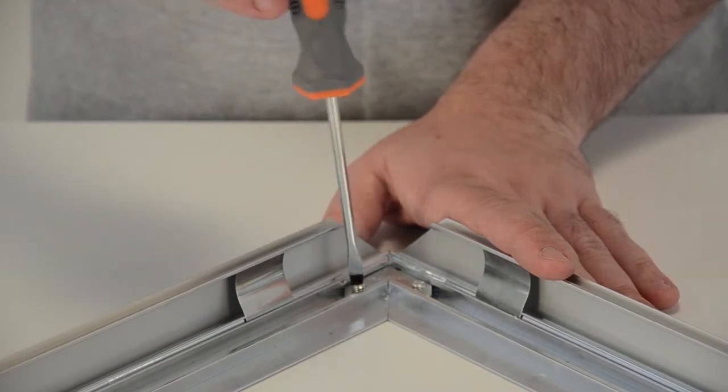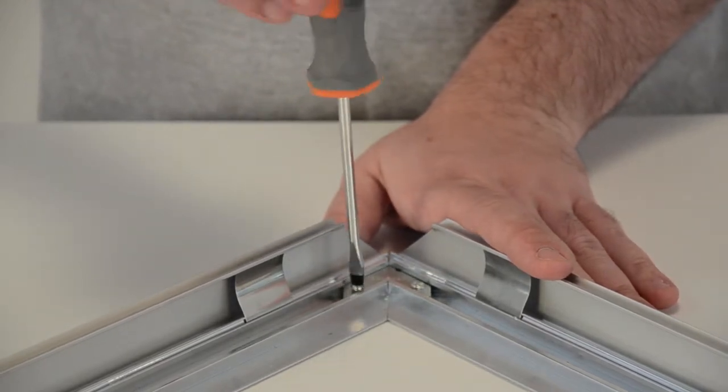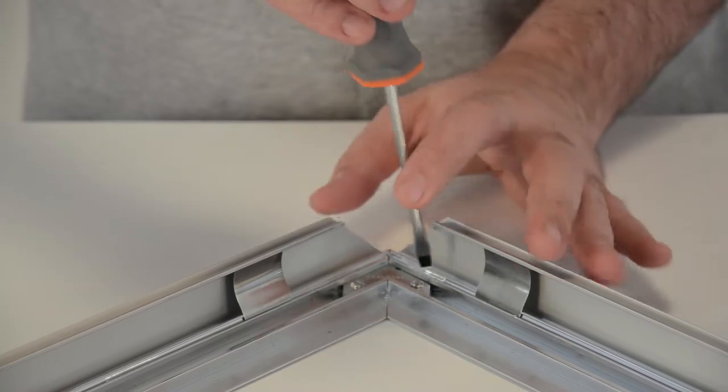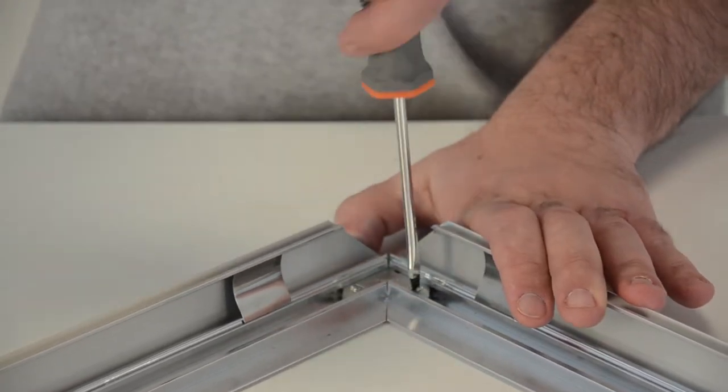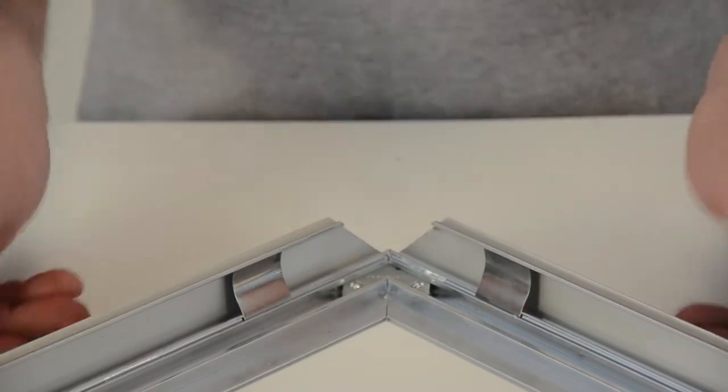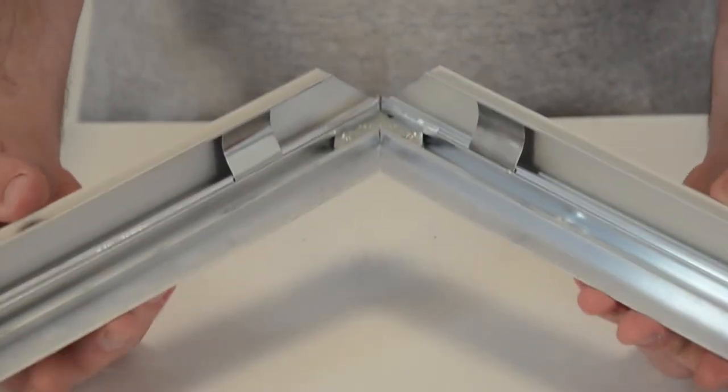Take your flathead screwdriver and just fasten the screws of the corner joining plate. After completing this simple step for all the corners, the snap frame is ready to be wall anchored.